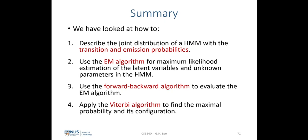In summary, this lecture covered how to describe the joint probability distribution of the HMM with transition, emission, and prior probability distributions; how to use the EM algorithm for maximum likelihood estimation of latent variables and unknown parameters; how this EM algorithm differs from the mixture model case; the use of the forward-backward algorithm to evaluate the EM algorithm; and finally, the Viterbi algorithm to find the maximal probability distribution and the configuration giving rise to it.